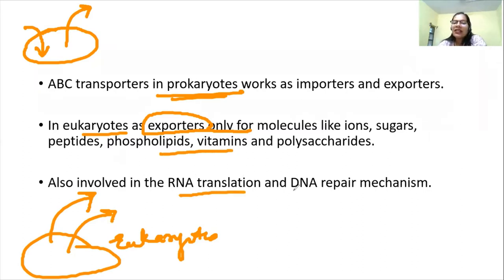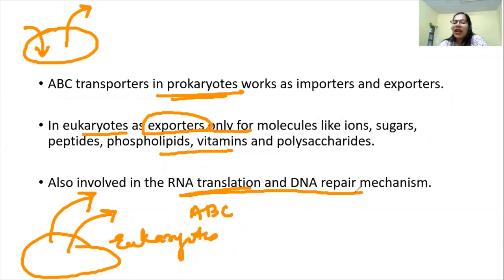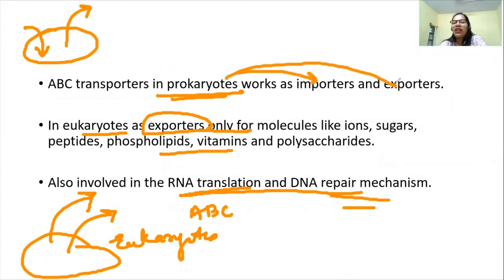ABC transporters are also involved in RNA translation and DNA repair mechanisms. When we study molecular biology — replication, transcription, and translation — we will also study the role of ABC transporters in RNA translation and DNA repair. In summary: in prokaryotes they act as both importers and exporters, whereas in eukaryotes they act as exporters only.